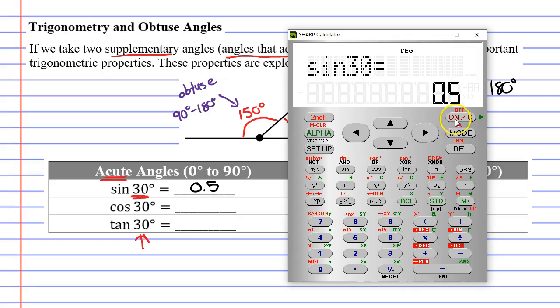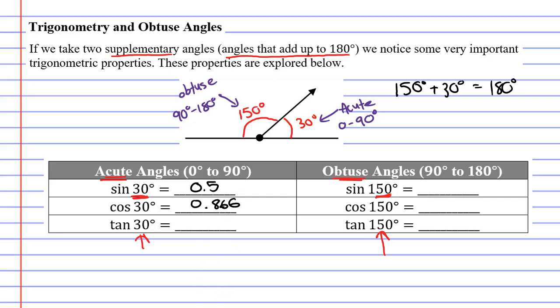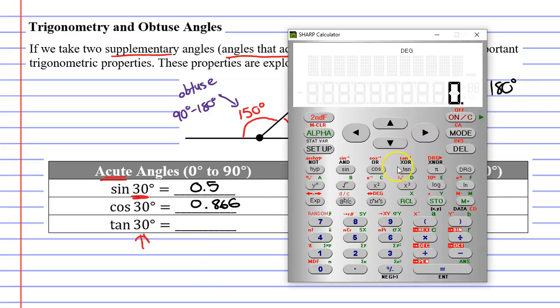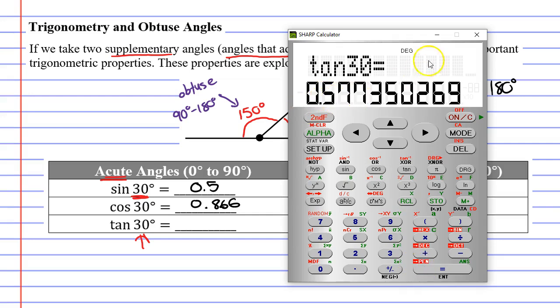Let's now find cos of 30. We get, we'll do it to three decimal places, 0.866. And finally tan of 30, 0.577.